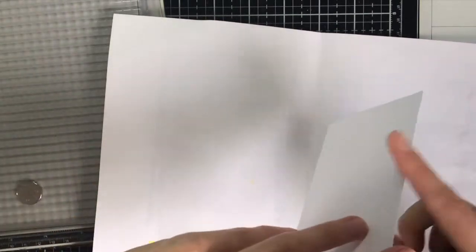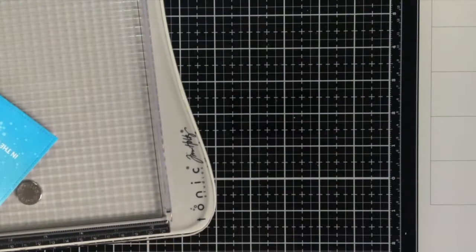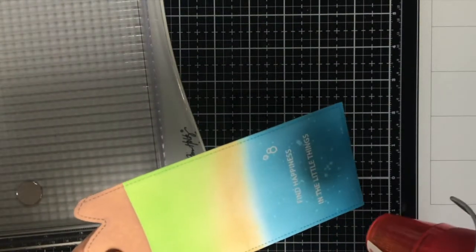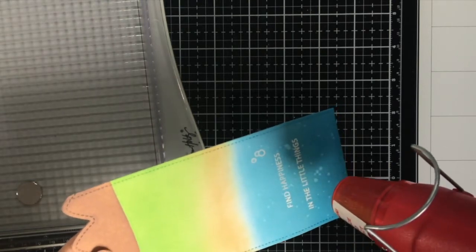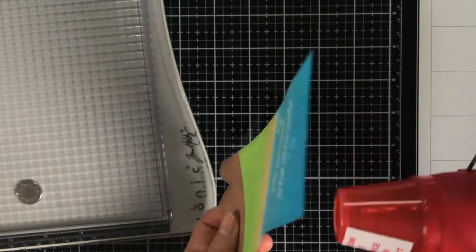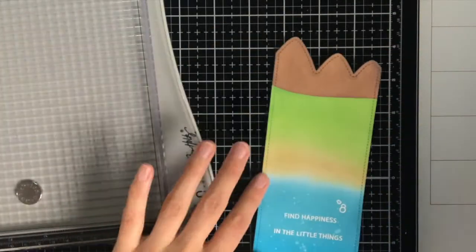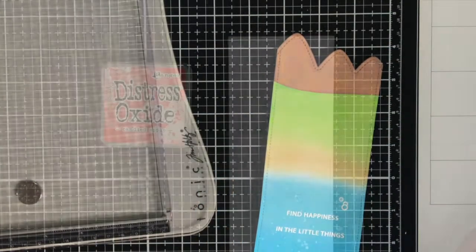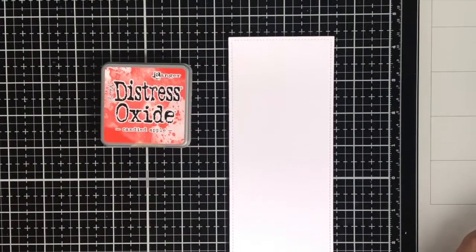All the excess embossing powder I am trying to catch on this piece of paper just to funnel it back into the jar. I also preheated my heat gun already so that it is nice and hot. This will help with melting the embossing powder quickly and also prevent warping.